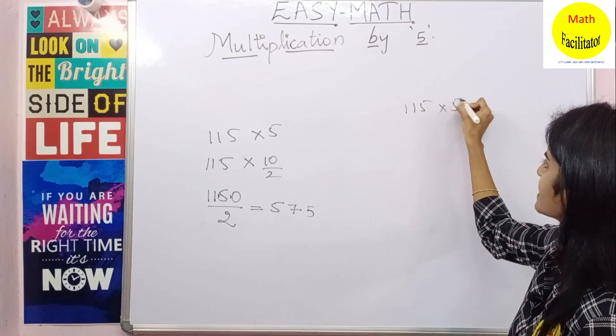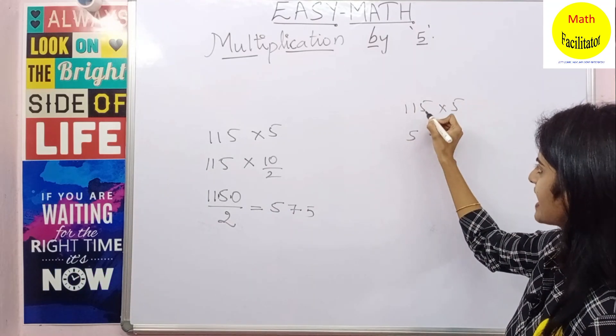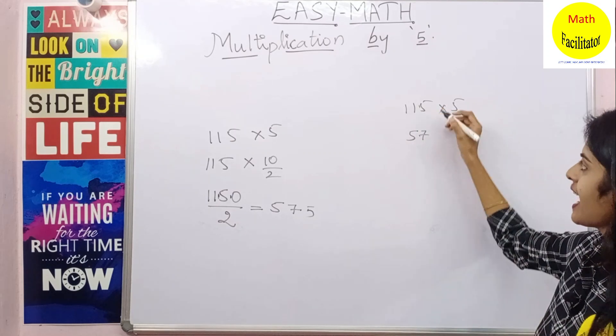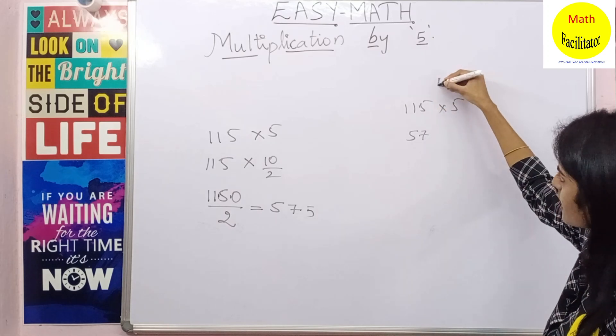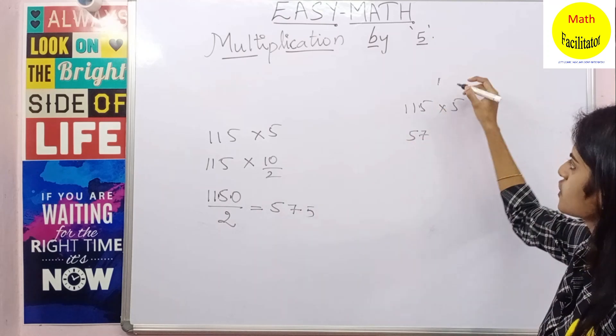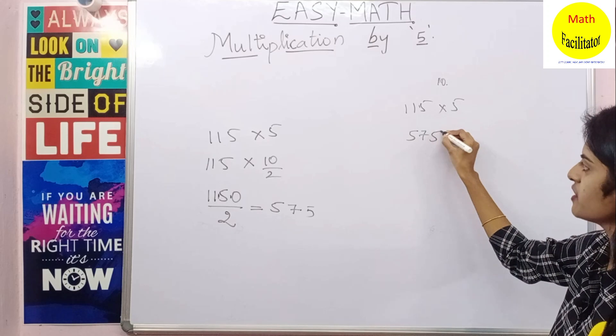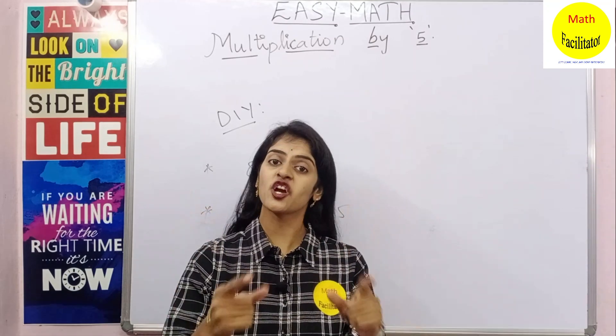The same thing what I have done is I have directly written it as 115 into 5 is nothing but 2 times 5 is 10 and you have a 1 here. 2 times 7 is 14 and you have a 1 remainder. For this one, already it is into 10 by 2, so you get a 0. This is nothing but 5. So this is how I have done.